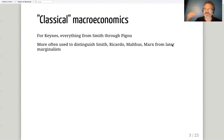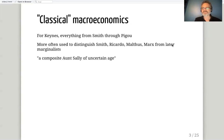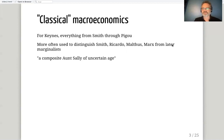This is not a history-of-thought class, so we'll stop there. The point is: when we say 'classical' in this context, we don't actually mean people usually called classical economists. We mean the position that Keynes is arguing against — what he later called a 'composite and Sally of uncertainty.' It's probably a composite position, but the model does capture commonalities among many immediately pre-Keynesian economists, as well as anti-Keynesian positions taken since.